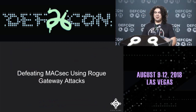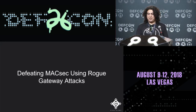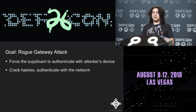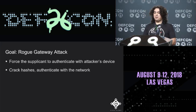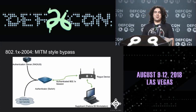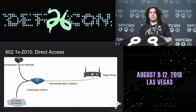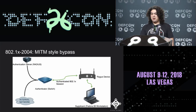This leads to our new contribution: a rogue gateway attack to defeat 802.1X-2010. Rather than defeating MACsec directly, we cut it off at the authentication process. The goal is to force the supplicant to authenticate with the attacker's device on the wired network. Once you capture hashes from a weak EAP method, you crack them, obtain credentials, and authenticate directly with the network.